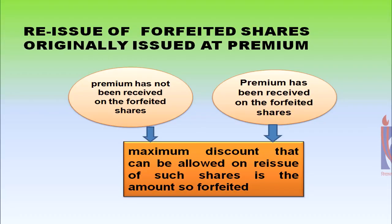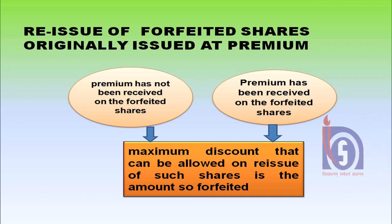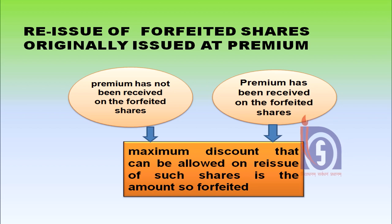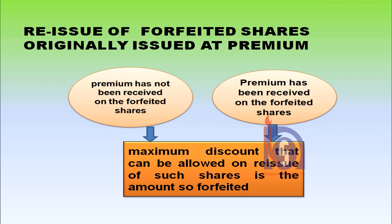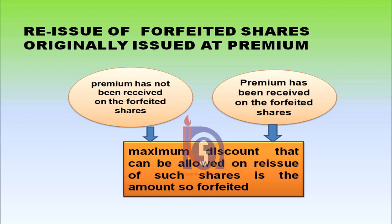Second situation is reissue of forfeited shares that were originally issued at premium. Under this case there may be two situations: first, when the premium has not been received on the forfeited share, and second, when the premium has been received on the forfeited shares. Under both cases, whether the premium money has been received or not, the maximum permissible discount that can be allowed on reissue of such shares is the amount so forfeited.